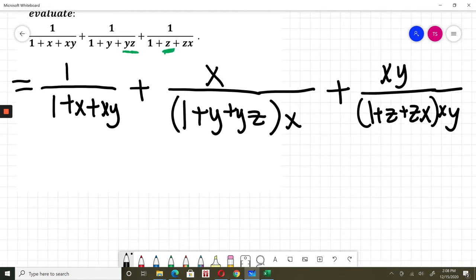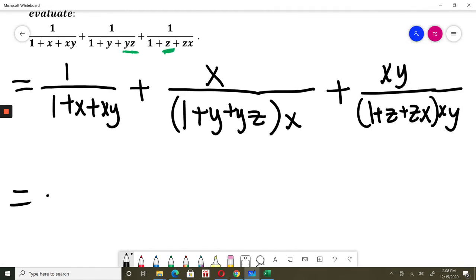OK, I will copy the first thing. I will multiply out the bracket. 1 times x, so x plus y times x.